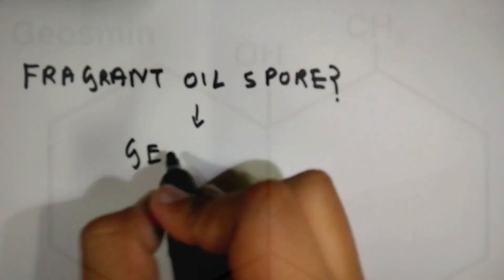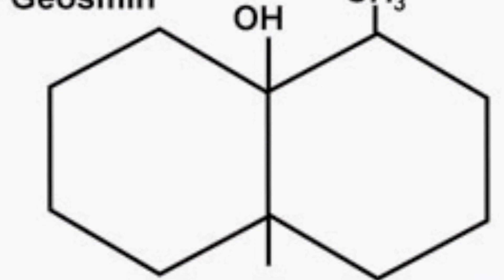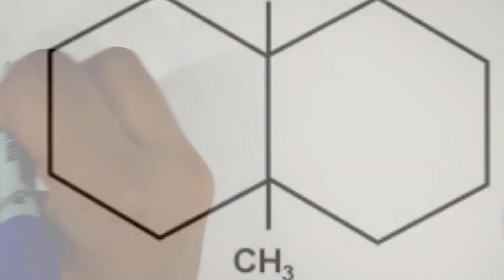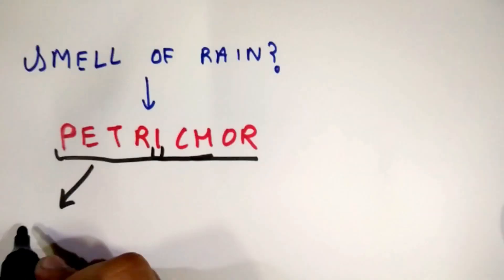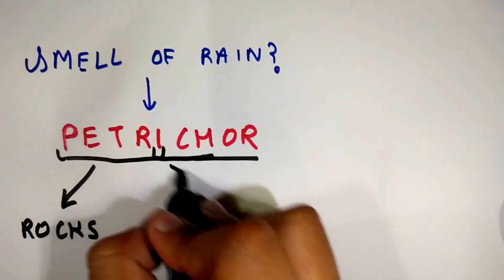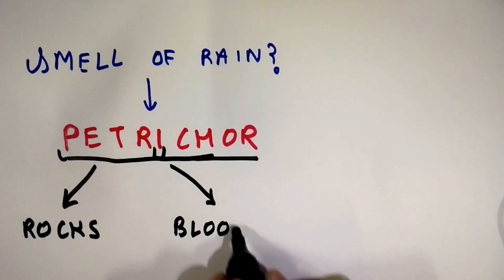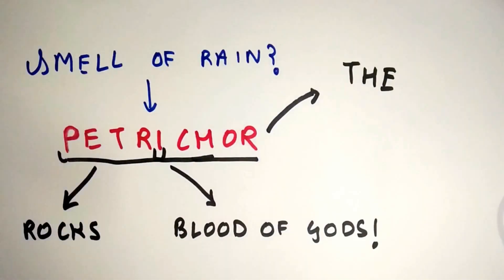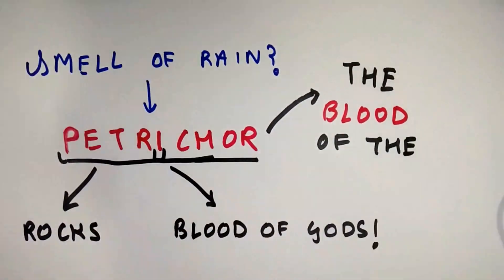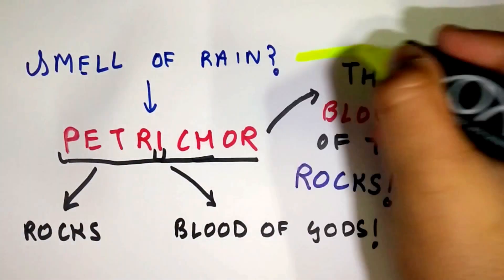The fragrant oil compound found in the rocks is known as geosmin, while the smell of rain itself is known as petrichor. Petrichor is a word derived from two Greek words: petri and ichor. Petri means something relating to rocks, while ichor in Greek mythology means the blood that flows in the veins of gods. So petrichor literally means the blood of the rocks.